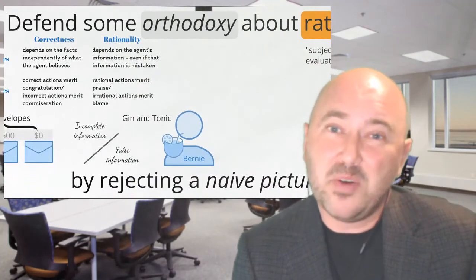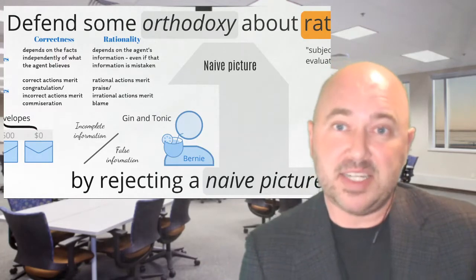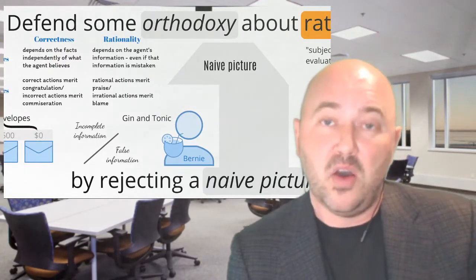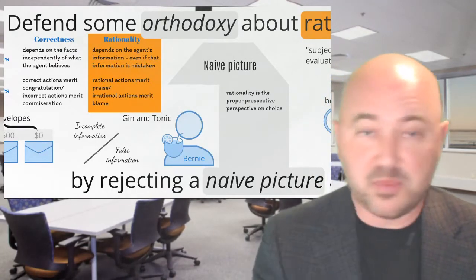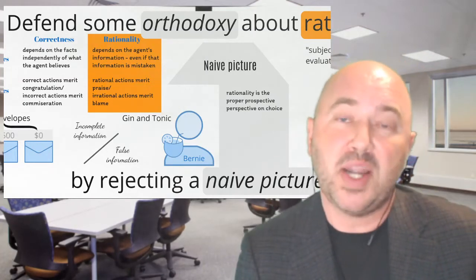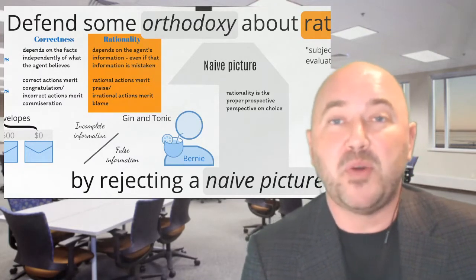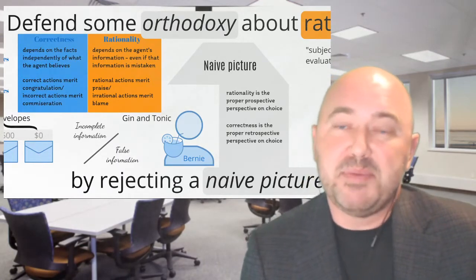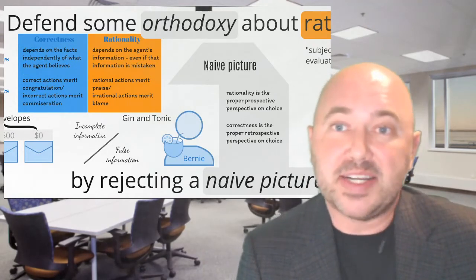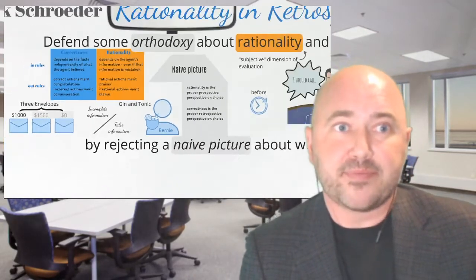I said I'm going to defend orthodoxy by rejecting the naive picture. The naive picture, besides being one of the first things you might think about rationality and correctness, should be thought of as a kind of overlay over orthodoxy. What the naive picture tells us is that rationality — which is what we should be using at the hot moment of choice, when we're trying to decide what to do — is the right perspective. Whereas correctness is a kind of external perspective; for our own actions, we're primarily interested in correctness in a backward-looking way, looking back at which of our choices were the right ones.